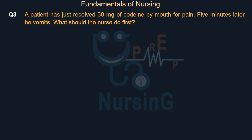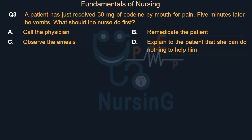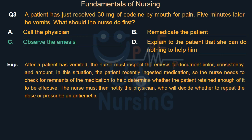A patient has just received 30 milligrams of codeine by mouth for pain. Five minutes later he vomits. What should the nurse do first? Option A: Call the physician. Option B: Re-medicate the patient. Option C: Observe the emesis. Option D: Explain to the patient that nothing can be done. The right answer is Option C: observe the emesis.